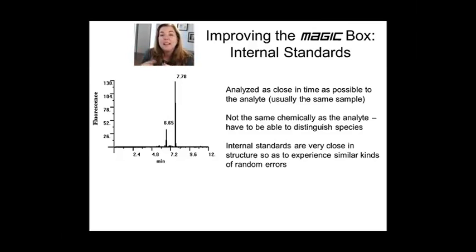In the case of AAS or AES, you want to pick a metal, if you're doing metals analysis, that has a very similar oxidation potential. The oxidation of metals can be one way in which your sampling efficiencies are lowered. So you really need the random error present on your analyte and your standard to be similar.